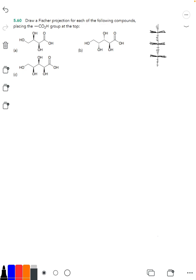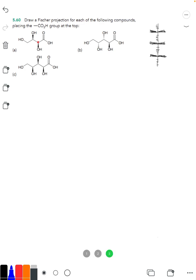I want to focus first on part A of this problem because part A only has two stereocenters. If we were to look at this we see that we have the carboxyl group drawn on the right here and then carbon two is a stereocenter right there and carbon three is a stereocenter right there. Carbon four is not a stereocenter because it has two hydrogens on it and so we don't have to worry about that one when we're drawing our Fischer projection.